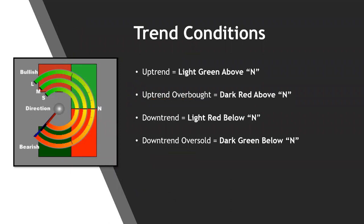When we start getting into the upper quadrant, this is where we're in an uptrend overbought scenario — dark red above neutral. When we get down into the lower section, that's downtrend oversold, dark green below. When you apply this to the chart, you're not going to see these quadrants — you're going to see divider lines. You can apply this to range, Renko, or time. You need to apply this to your day trading timeframes. Most of the analysis is used for timing arbitrage, but I want to give you an actionable example of why this would be really important for you.